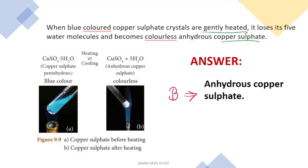So the blue colored crystalline salt, Copper Sulphate Pentahydrate, when heated, splits into CuSO₄ and 5H₂O. The resulting CuSO₄ is colorless — white and colorless — as the water molecules have been removed. This white colorless compound is called Anhydrous Copper Sulphate, which is B.